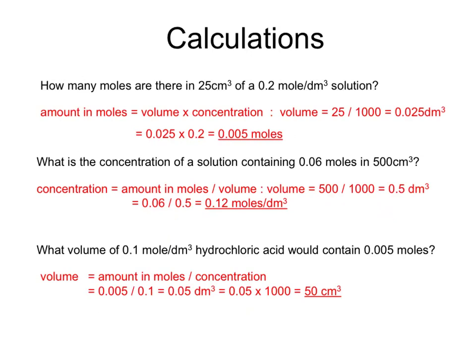Let's try some simple calculations. The first: how many moles are there in 25 cm³ of a 0.2 mol/dm³ solution? The concentration is in correct units but the volume is not — we divide 25 by 1000 to get 0.025 dm³. Using moles = volume × concentration: 0.025 × 0.2 = 0.005 moles.